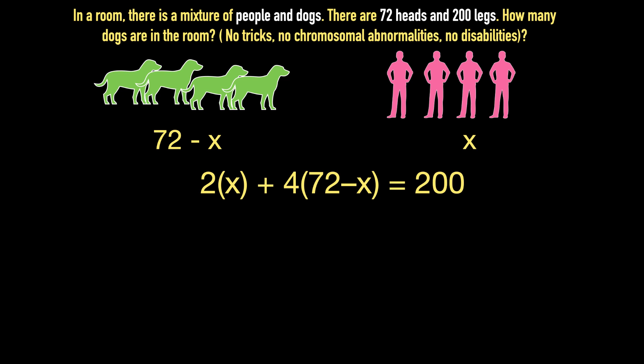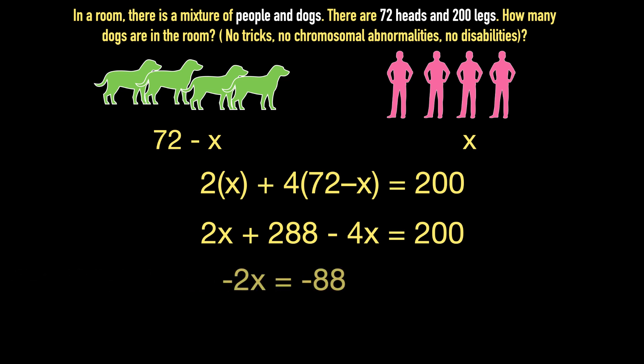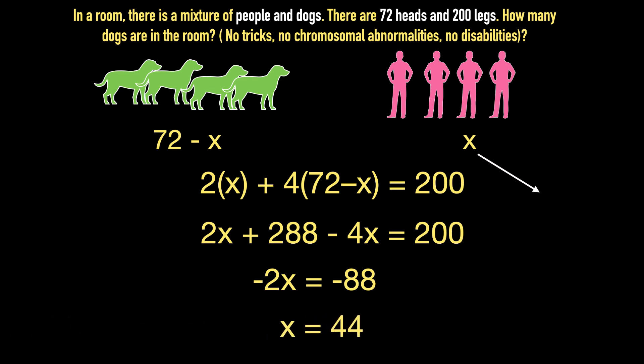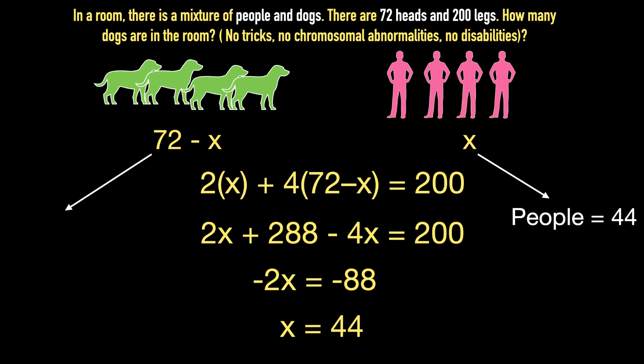After solving this, the equation becomes 2x plus 288 minus 4x equals 200. Further solving for x, the equation becomes minus 2x equals minus 88, and thus x equals 44. So we have x equals 44 people, and 72 minus x which is equal to 28 dogs.